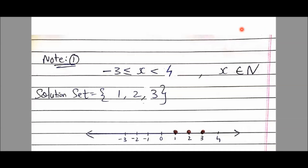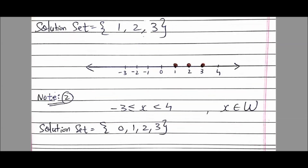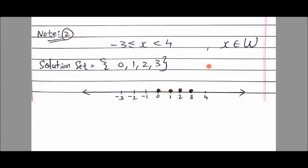Note number two. Same range: -3 ≤ X < 4, but the replacement set is X belongs to whole numbers. The difference is whole numbers start with zero. So -3, -2, -1 do not belong to whole numbers, but zero does belong. After considering the replacement set of whole numbers, the solution set is {0, 1, 2, 3}. Elements that are inclusive are represented by darkened circles: 0, 1, 2, and 3 each get a darkened circle.